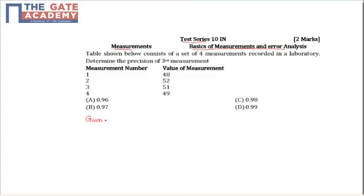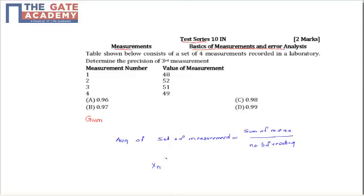First, we will calculate the average value of the set of measurements. The average value of the set of measurements is equal to the sum of measurements divided by the number of readings. That is, X̄ = (48 + 52 + 51 + 49) / 4. Solving this, you will get the value of X̄ as 50.